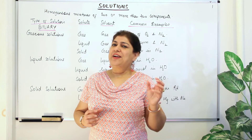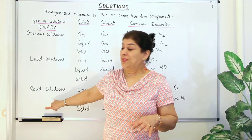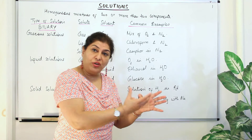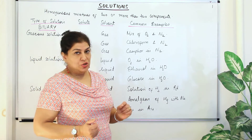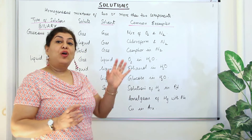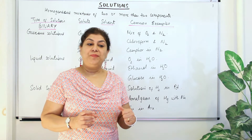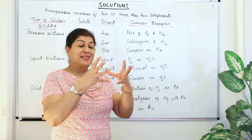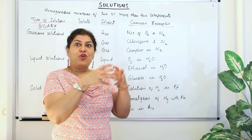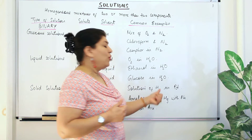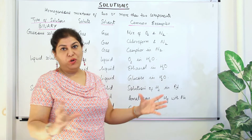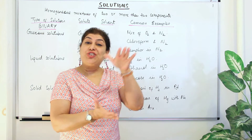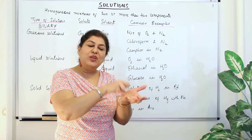The third and rarer category is solid solutions, where the solvent is a solid. There are three types. Gas in solid: an example is hydrogen dissolved in palladium. A sponge is also a good example — it is a solid with air (a gas) present inside it, so anything spongy, like a sponge or cake, represents a gas-in-solid solution.